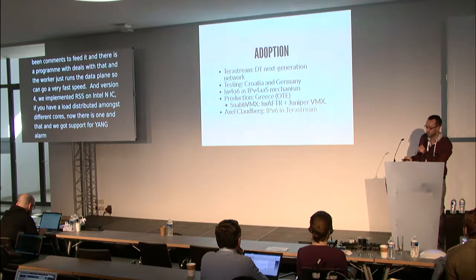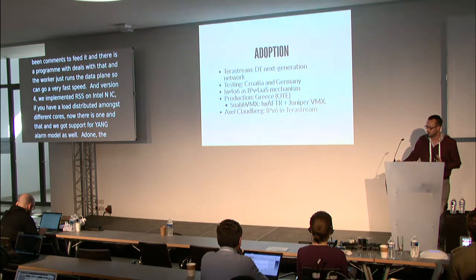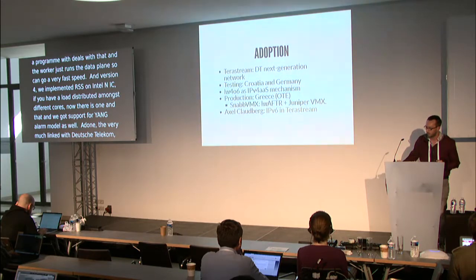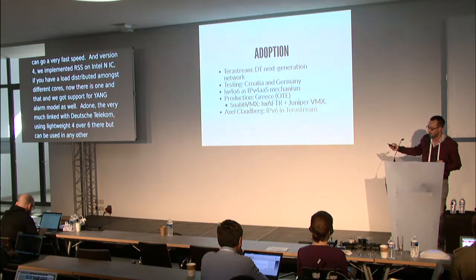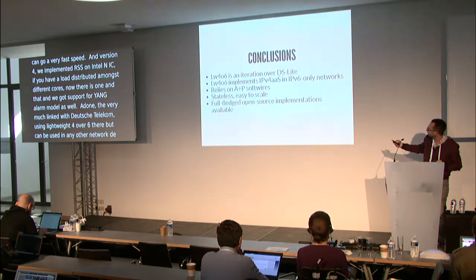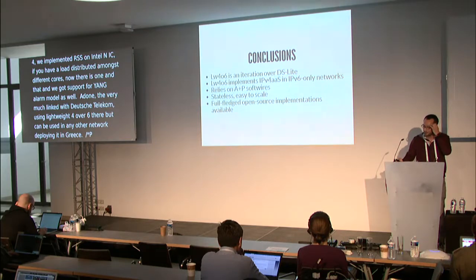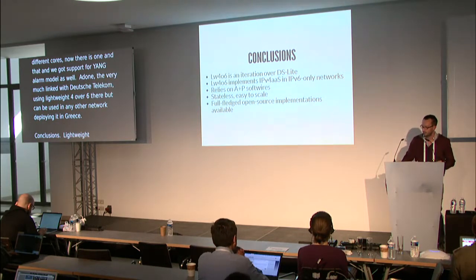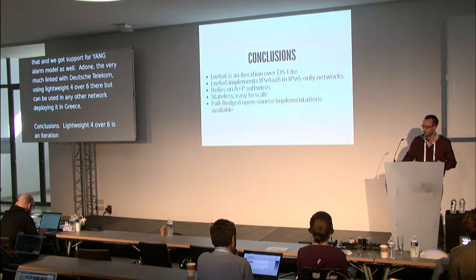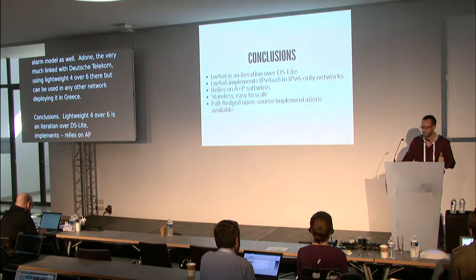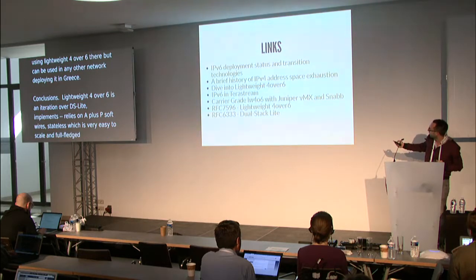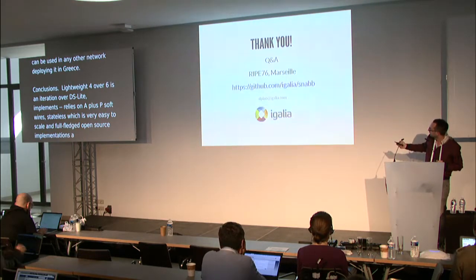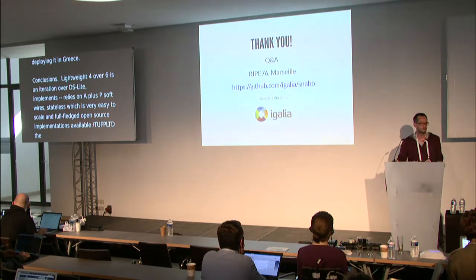About adoption: the project is very much linked with Deutsche Telekom TerraStream next-generation network, which uses Lightweight 4 over 6. But it can also be used in any other network — for example OTE is deploying it in Greece. Conclusions: Lightweight 4 over 6 is an iteration over dual stack lite. It implements IPv4 as a service in IPv6-only networks, relies on A+P softwires, is stateless — which makes it very easy to scale — and there are full-fledged open source implementations available today. There is a collection of links and I can take questions. Thank you very much.